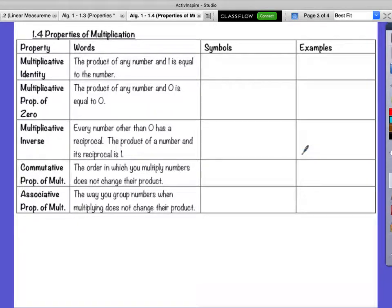Did it change what the number was? That was where we added something to it and it didn't change what the number was, right? Multiplicative identity. The product, multiplying of any number and 1 is equal to that number.